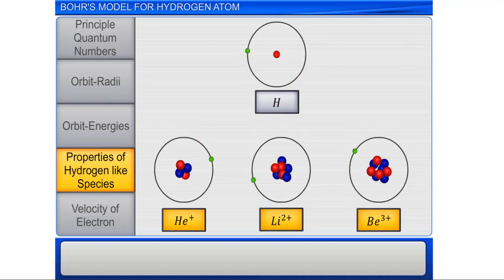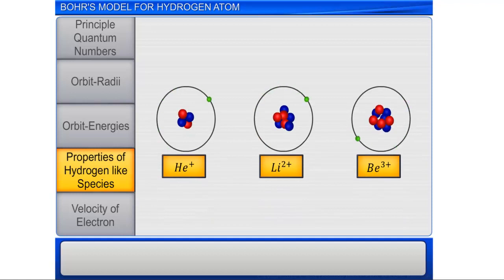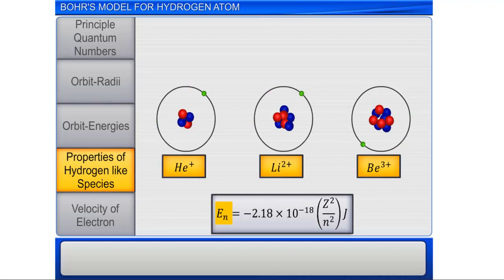The energies of the stationary states of hydrogen-like species are given by the expression En is equal to minus Rydberg constant multiplied by the square of atomic number divided by the square of principal quantum number.